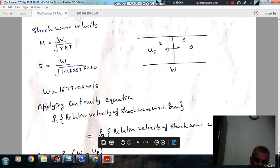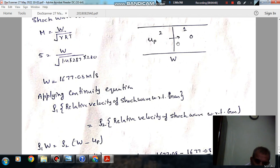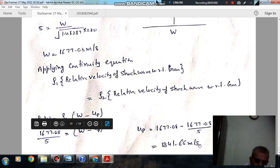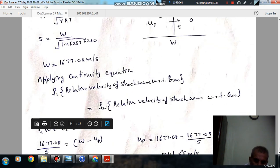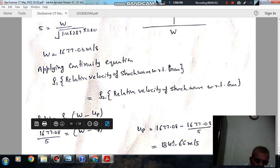Now we can apply continuity equation here. This portion has relative velocity W with respect to this portion. Rho1 into W equals the mass flow rate. In the station behind the shock, the relative velocity is W minus U. Here the flow is moving in this direction and W is also moving in this direction. So relative velocity is W minus U. Solving, U comes out to be 1341.66 meter per second.